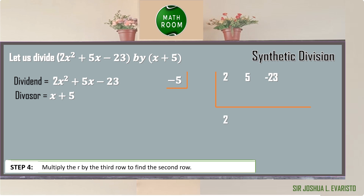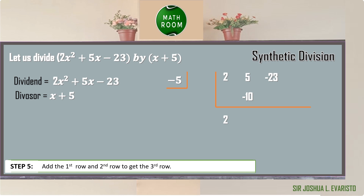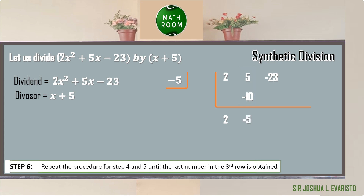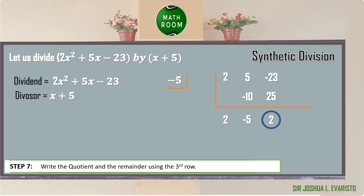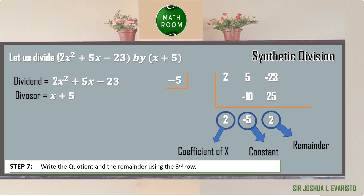Multiply r by the value in the third row to find the second row: negative 5 times 2 equals negative 10. Add the first row and second row to get the third row: 5 plus negative 10 equals negative 5. Repeat for the next column: negative 5 times negative 5 equals 25, and negative 23 plus 25 equals 2. The last number, 2, is the remainder. The remaining third-row values give the quotient: 2x minus 5, with remainder 2.